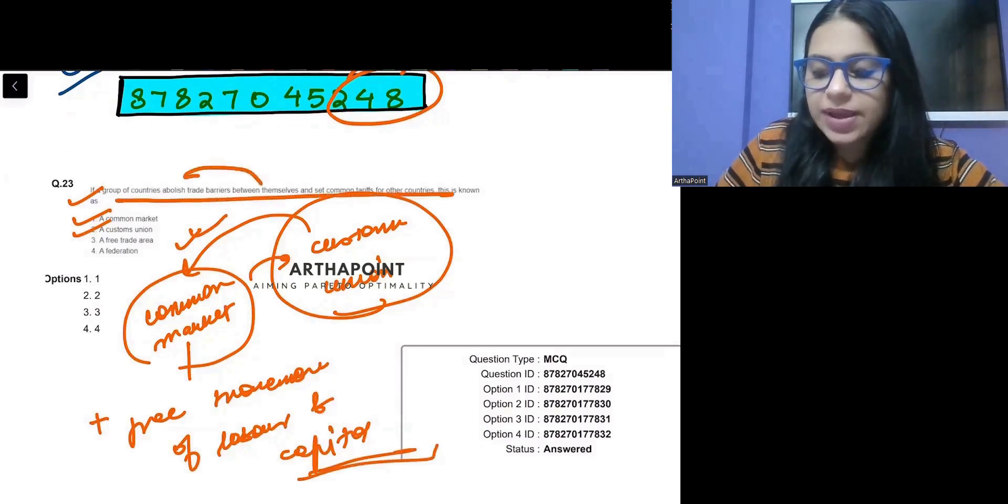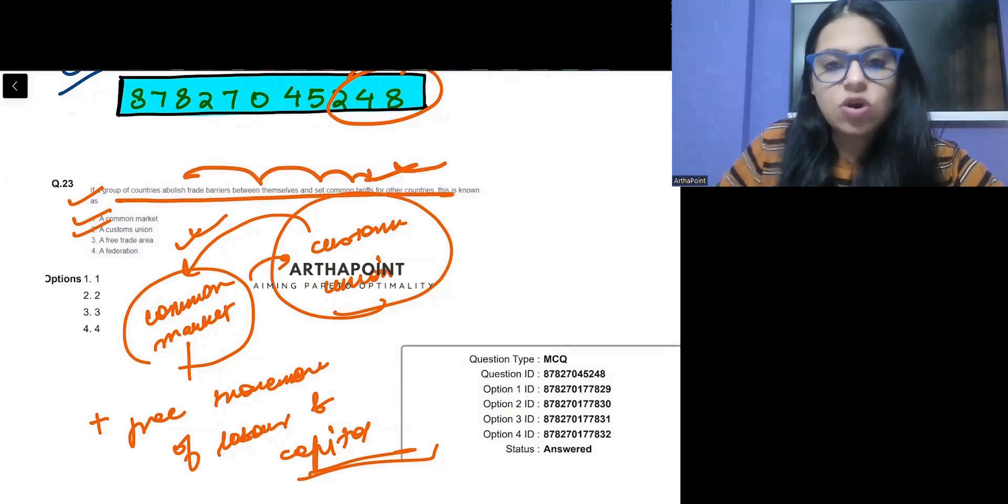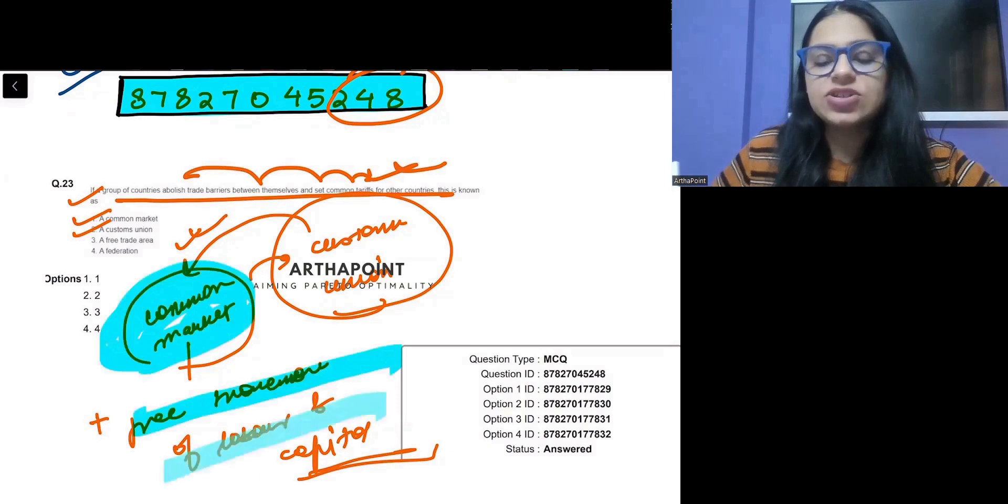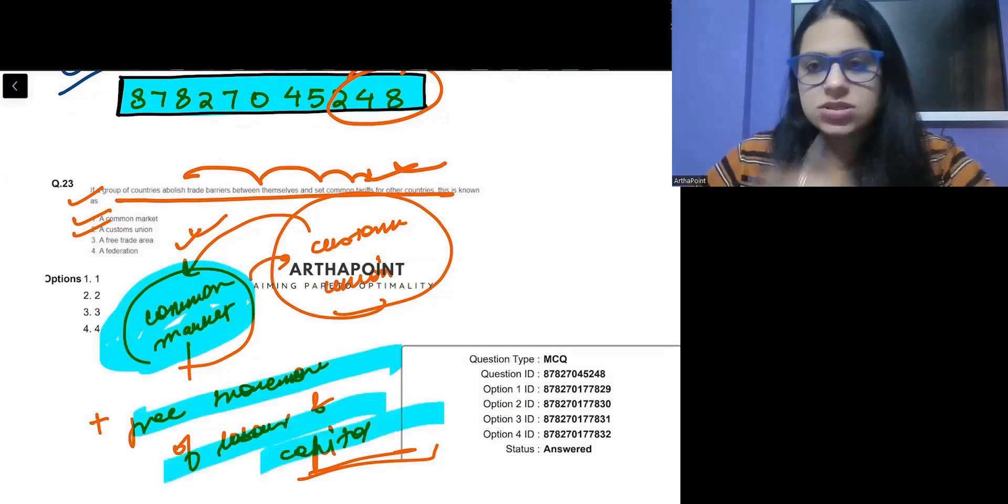So countries that abolish trade barrier between themselves and set common tariff can be common market, and it also has these additional properties though. You cannot negate this answer.